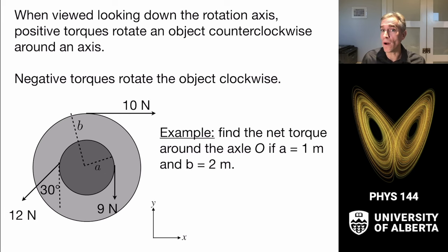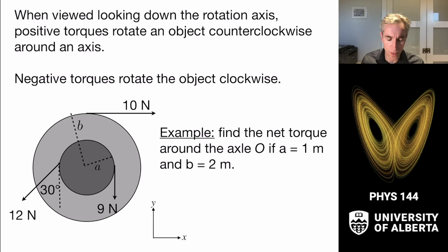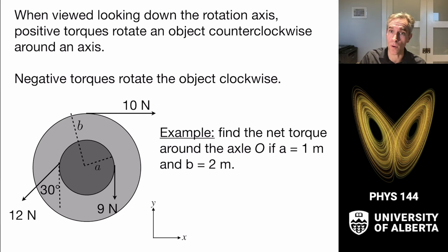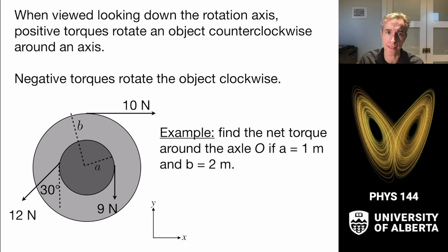We often focus on two-dimensional objects, looking at a system from the top down, defining torques as if looking down along the positive z-axis. We give signs to the torques: looking down along the positive z-axis, an object rotating counterclockwise gets a positive torque — measured from the x = 0 line in the counterclockwise direction. Negative torques operate clockwise.